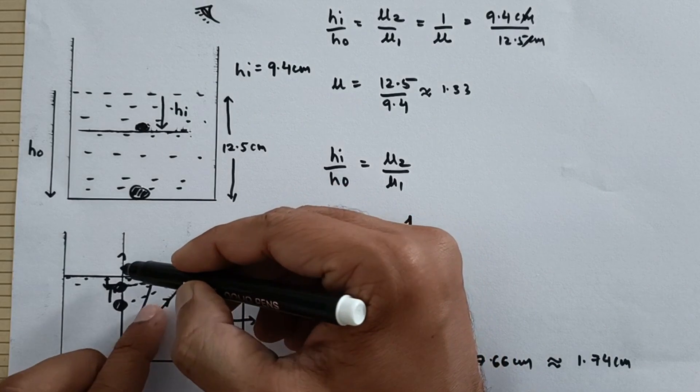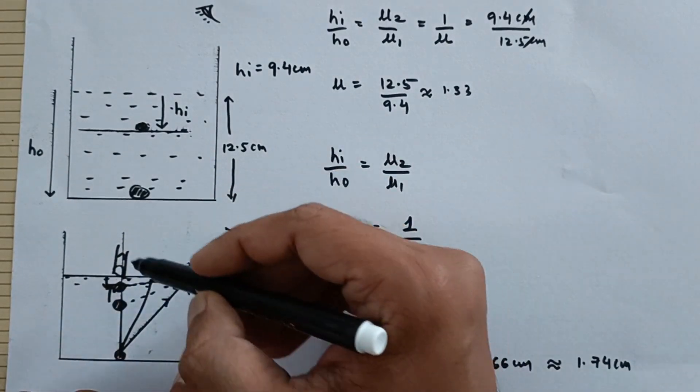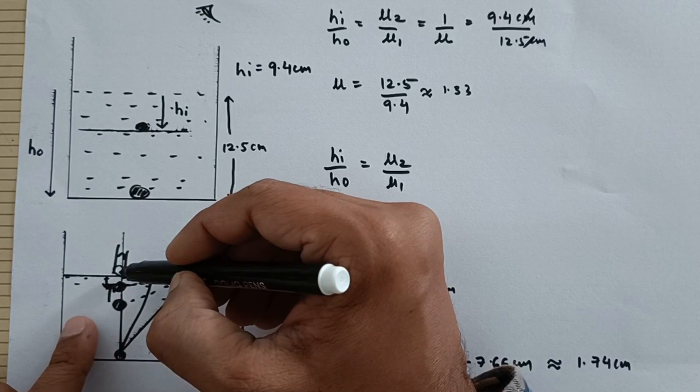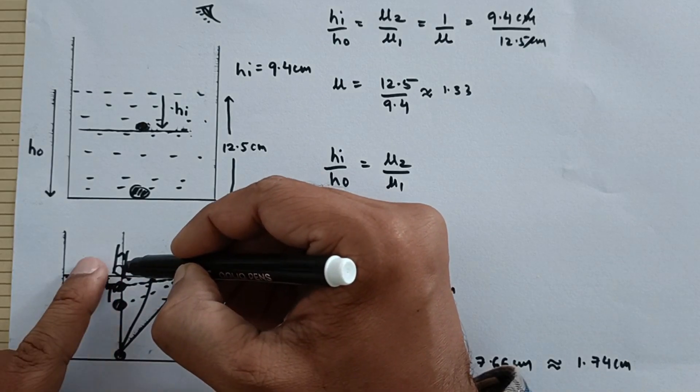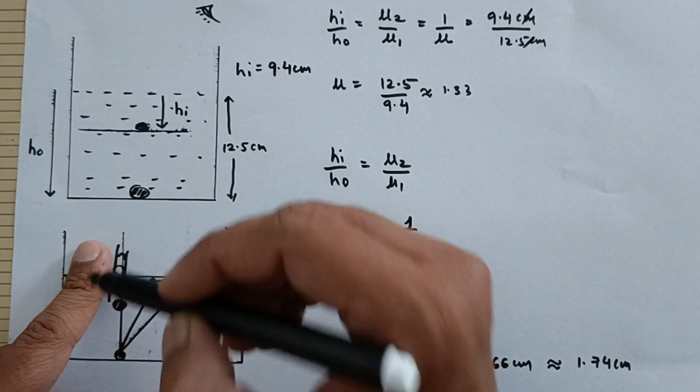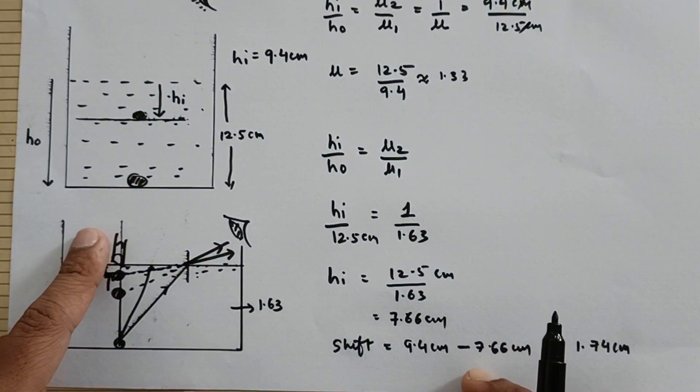You will have to assume like this that here the microscope was very near to the surface. Earlier it was seeing this. Now since the image is raised up you will have to shift the microscope up in order to receive the rays from here. That is the answer.